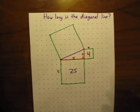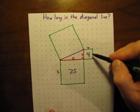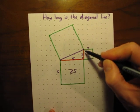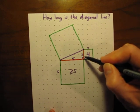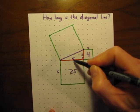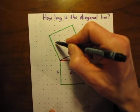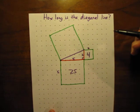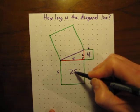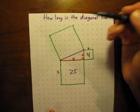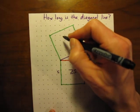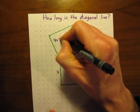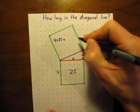And now what the Pythagorean Theorem says is that the area of this square, the area of the square of this leg, plus the area of the square of this leg, equals the area of the square of the hypotenuse. So four plus 25 equals the area of this square. Four plus 25 is 29.